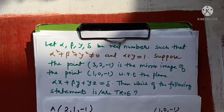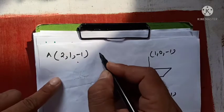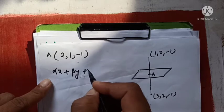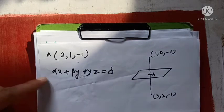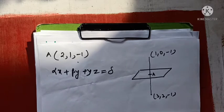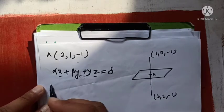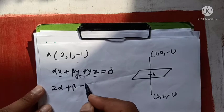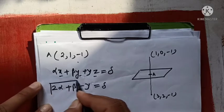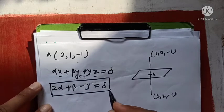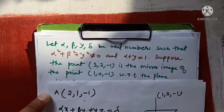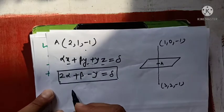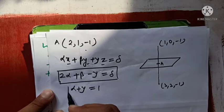The plane's equation given to us is: alpha·x + beta·y + gamma·z = delta. I substitute x=2, y=1, z=-1 into this equation, and we get: 2·alpha + beta - gamma = delta. This is our first condition. Additionally, from the question itself, alpha + gamma = 1, so this becomes our second condition.